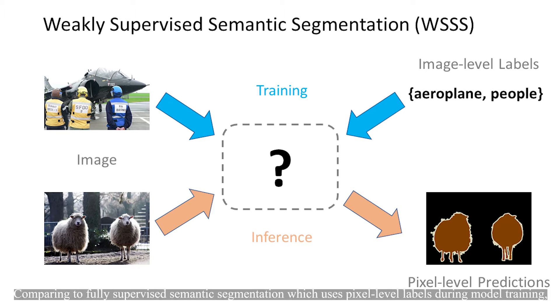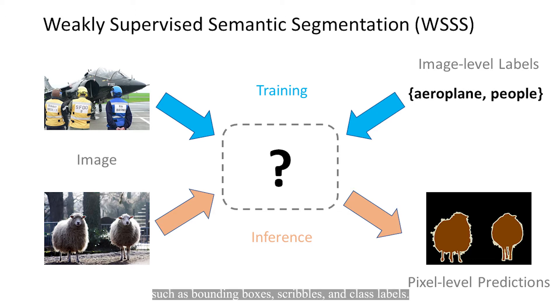Comparing to fully supervised semantic segmentation, which uses pixel-level labels during model training, weakly supervised semantic segmentation turns to use low-cost annotations such as bounding boxes, scribbles, and class labels.